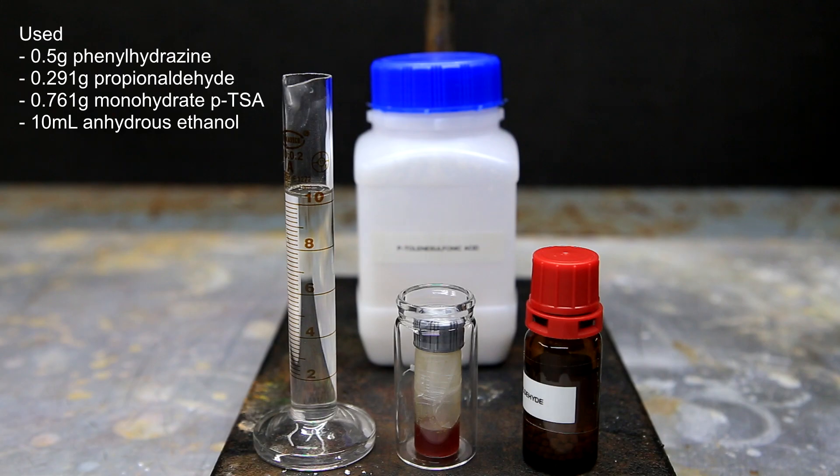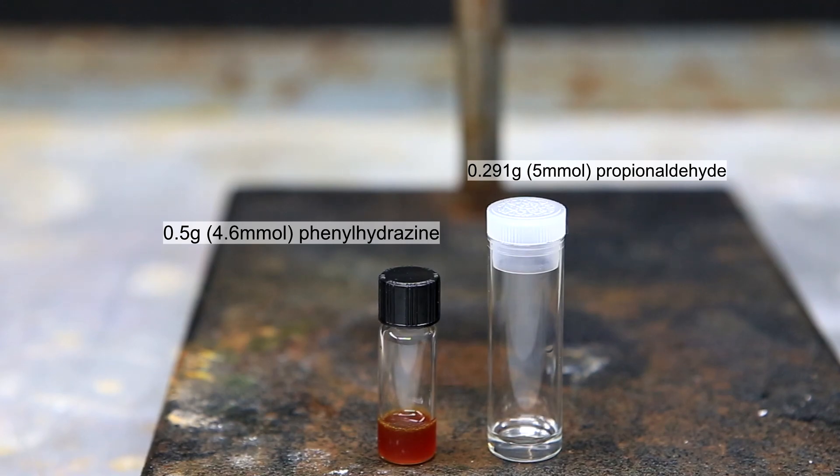As a catalyst, we'll use p-toluene sulfonic acid. This acid is also known as p-TSA, and I bought it from the store, but in a future video, I might make it myself. For the reaction, I decided to use 0.5 grams of phenylhydrazine and 0.291 grams of propionaldehyde. The amount of propionaldehyde that is used is a bit less than a 10% excess. This makes sure that all of the phenylhydrazine is consumed, and any excess propionaldehyde can be easily removed by evaporation.